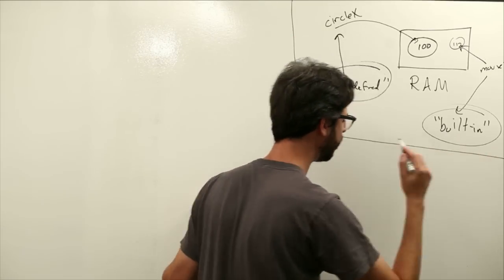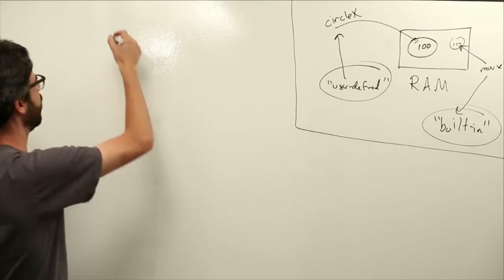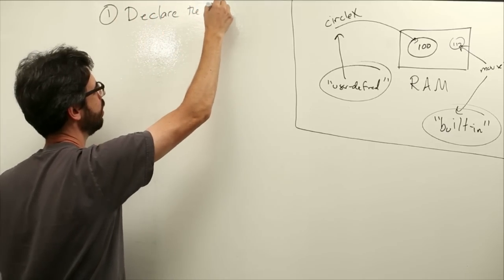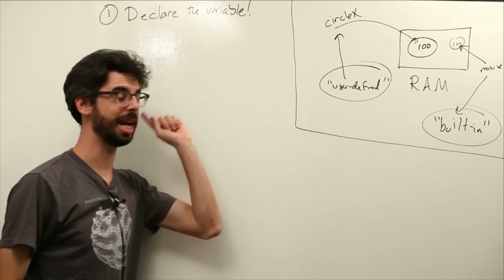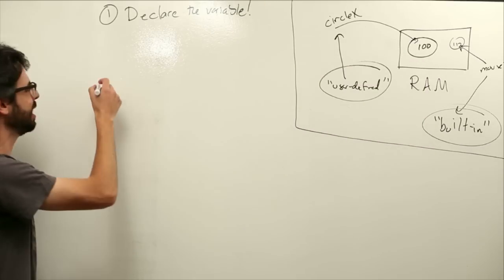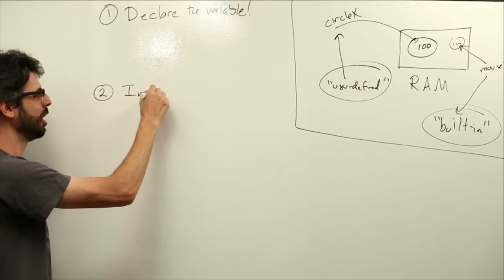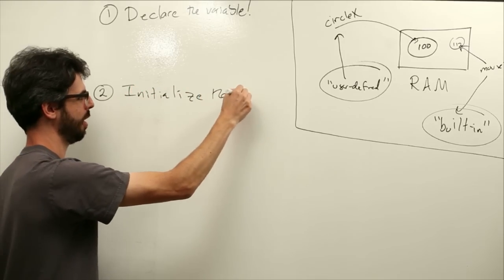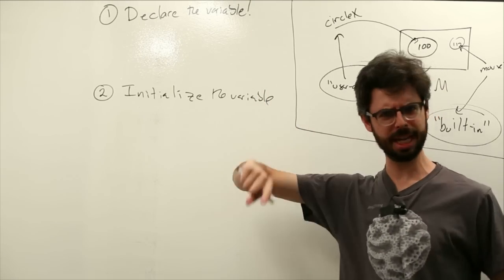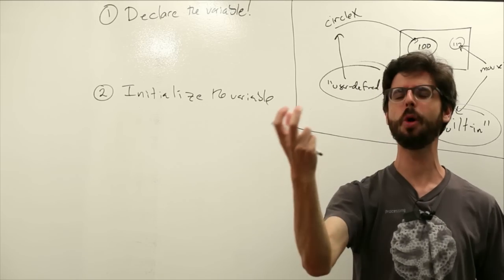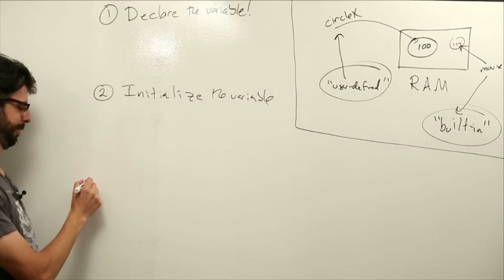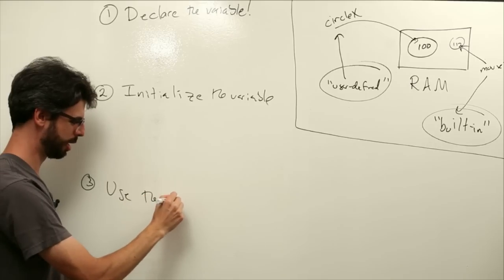The first step, we're going to say is, we have to declare the variable. Do you see that? Yes, you can. Declare that, our intention is to have a variable. The second step is to initialize the variable, meaning we're going to have a variable and this is going to be its first value, the value that it's holding on to, that it's storing when the program begins. And the third step, use the variable.